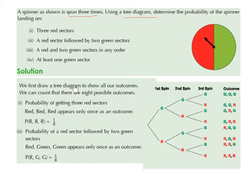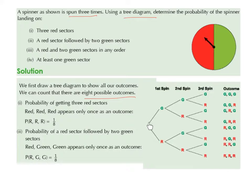We can first draw a tree diagram to show all our outcomes. We can count that there are eight possible outcomes. So on our first spin, we can land on green or we can land on red. If we land on green on the first spin, on the second spin we can land on green or land on red. If we land on red on the first spin, on the second spin we can land on green or we can land on red.